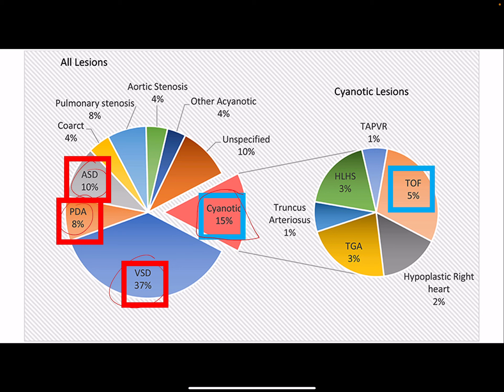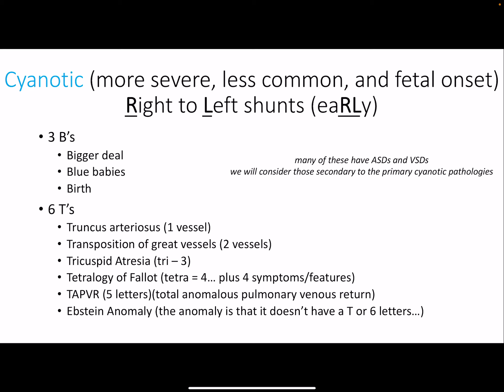The cyanotic defects are a much smaller portion. Tetralogy of Fallot is probably the most common cyanotic defect. These are more severe, less common, and cyanotic — babies turn blue. They are fetal onset. You also see ASDs and VSDs in these conditions, but consider them secondary to the primary cyanotic pathology. So if tetralogy of Fallot includes a VSD, you'd still classify it as cyanotic, not acyanotic.